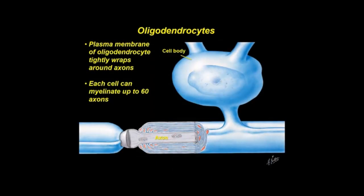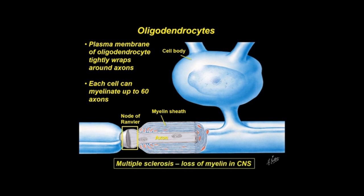Seen schematically, the plasma membrane of an oligodendrocyte tightly wraps around axons and forms the myelin sheath. Nodes of Ranvier occur at intervals between adjacent oligodendrocytes and facilitate saltatory conduction. Multiple sclerosis is a hereditary disorder that targets oligodendrocytes and involves a loss of myelin on axons in the CNS.